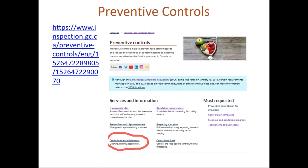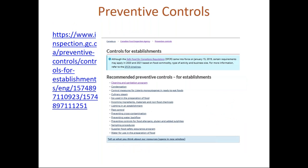If we go back to the previous screen and select the controls for establishment link, this page lists all of the recommended preventive controls for establishment. You may not need to implement every section. For example, if you don't have any sources of condensation in dry processing, or you don't use culinary steam, you don't need a written preventive control to explain how you control those hazards.